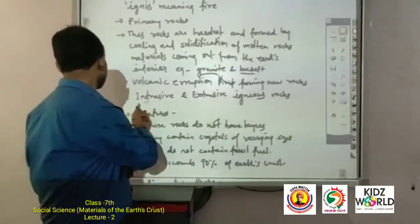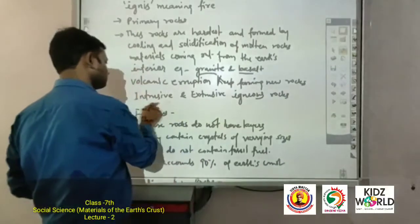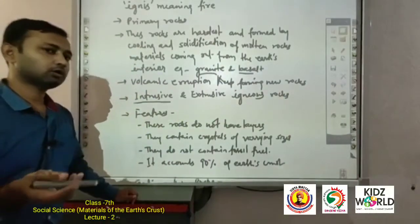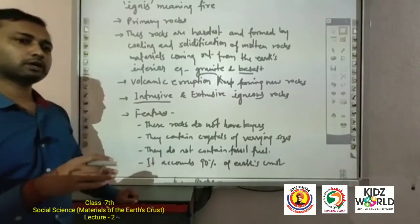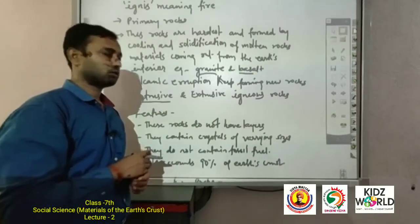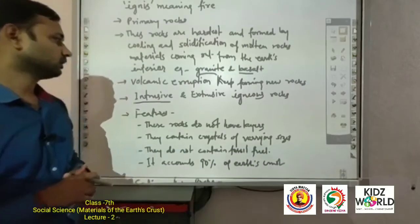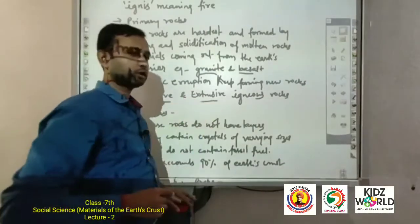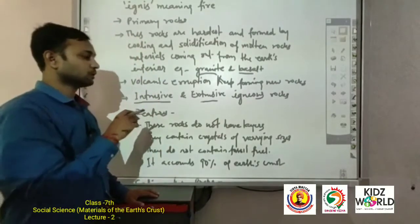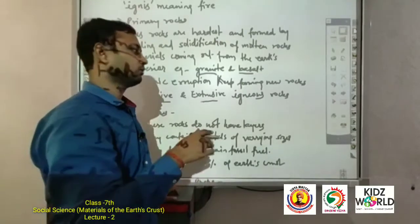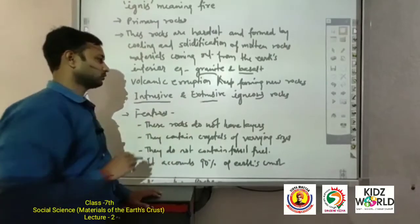Intrusive igneous rocks are formed when molten material rising from the earth's interior is unable to reach the surface and solidifies within the earth's crust before reaching it. Extrusive igneous rocks are formed when molten material such as magma and lava, as during volcanic eruptions, comes out from inside the earth and solidifies on the surface.